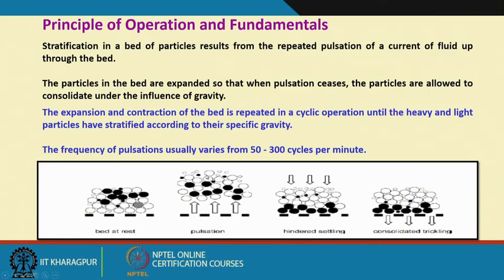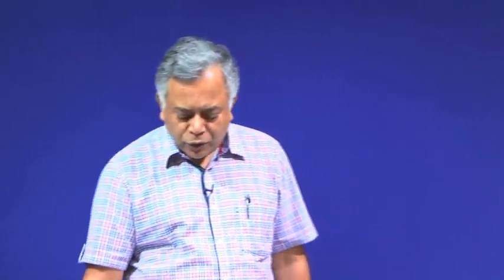When you try to expand the bed, the relatively lighter particles move to a much higher height, and the heavier particles — because their mass is more — travel less. The dark-colored heavier particles remain lower while the lighter particles travel further upward. During the suction stroke, because a same-size heavier particle has more mass and traveled less distance upward, it reports back to the jig screen bed faster than the lighter particles.